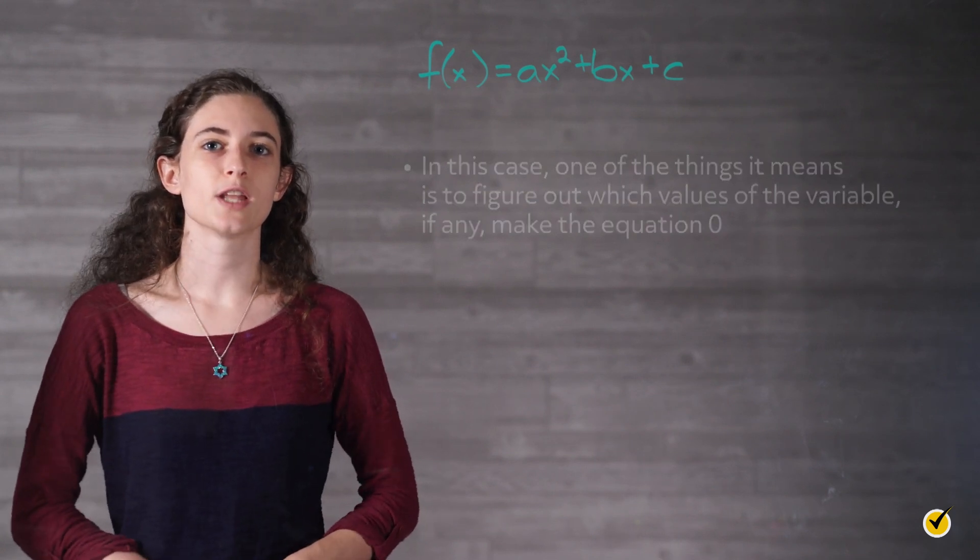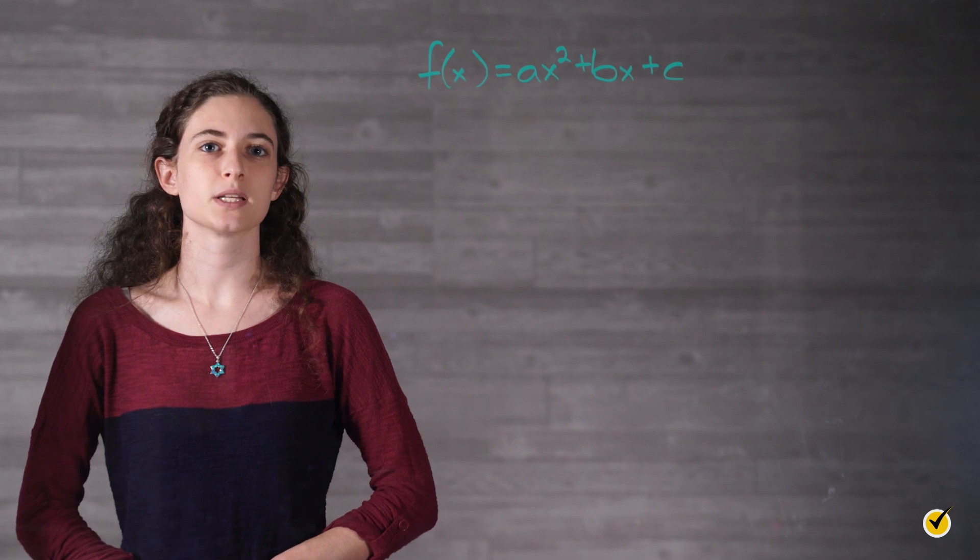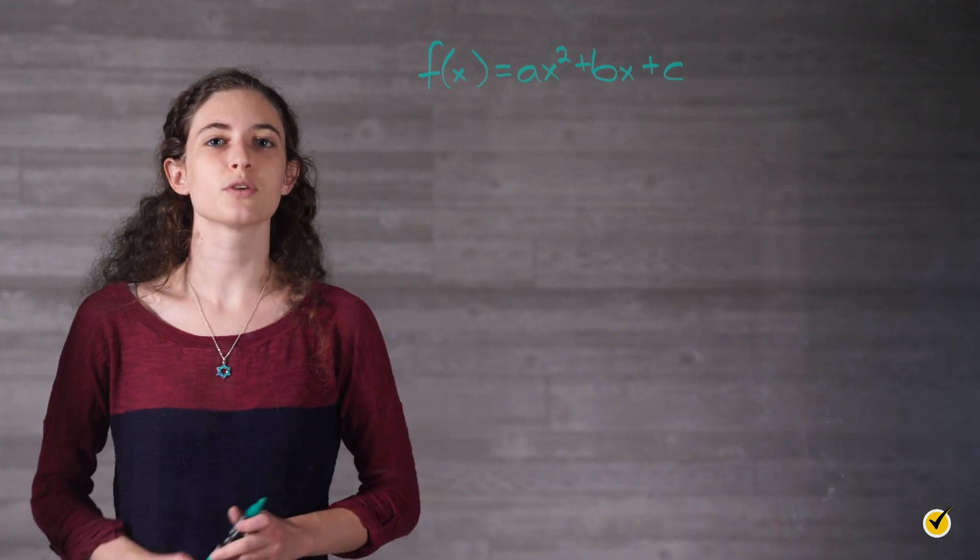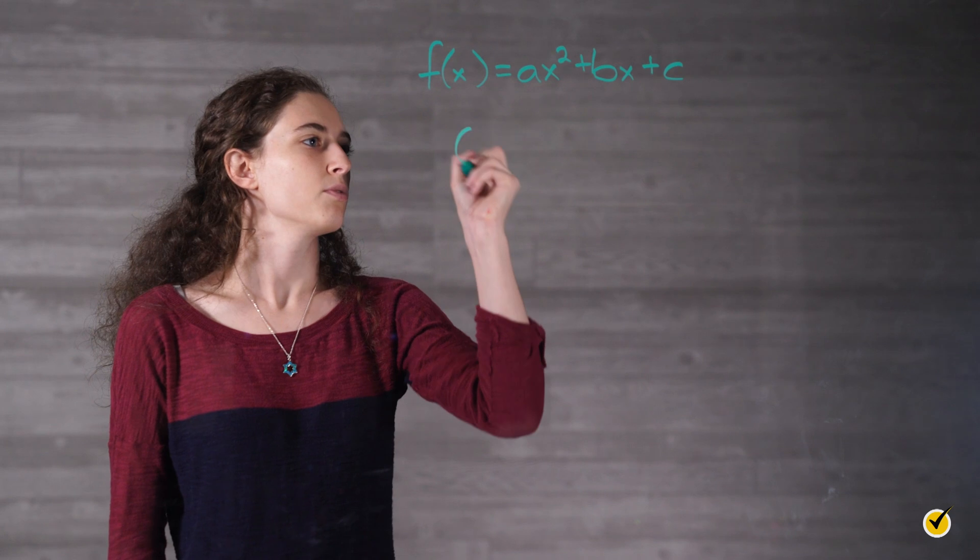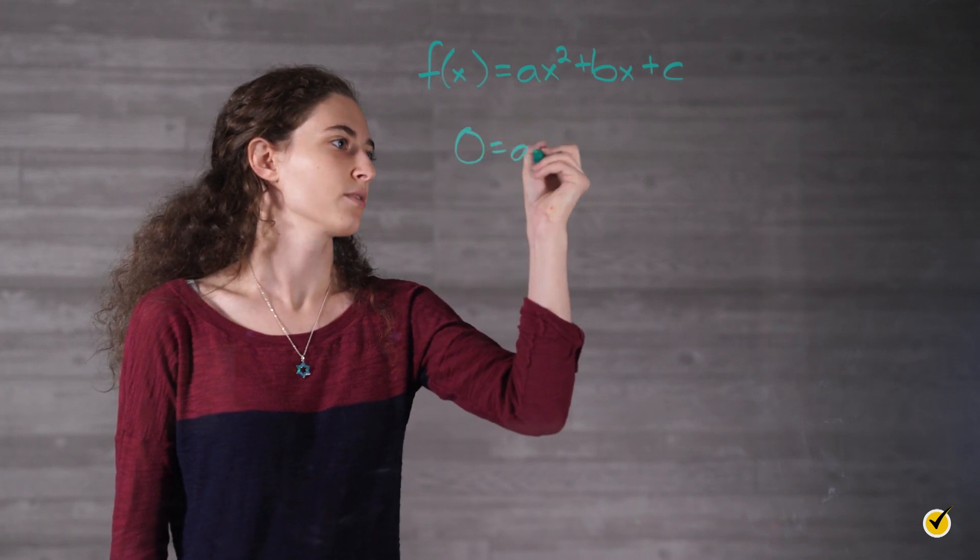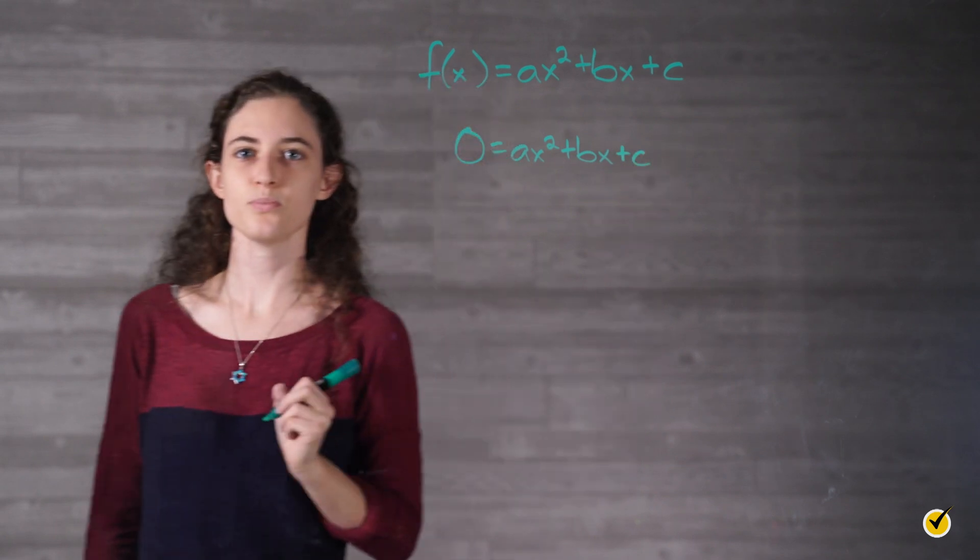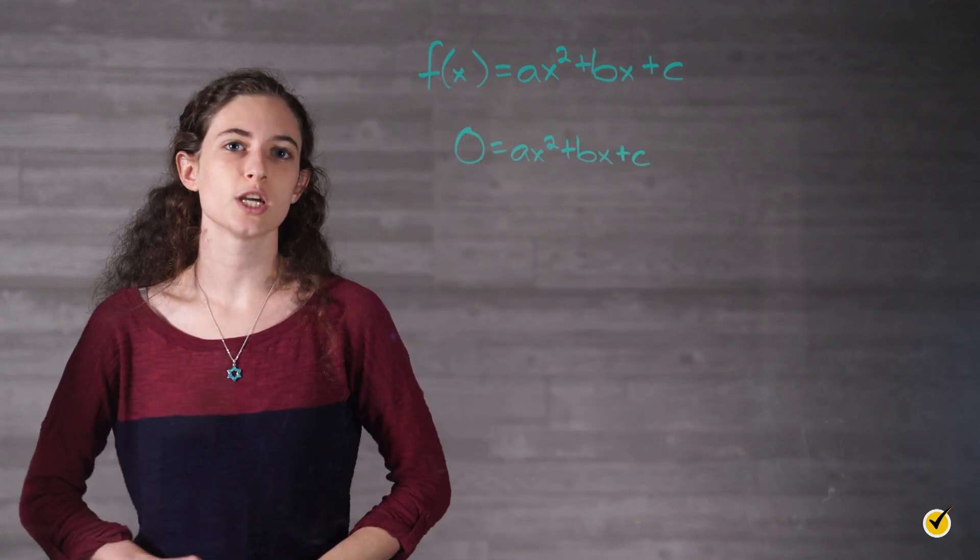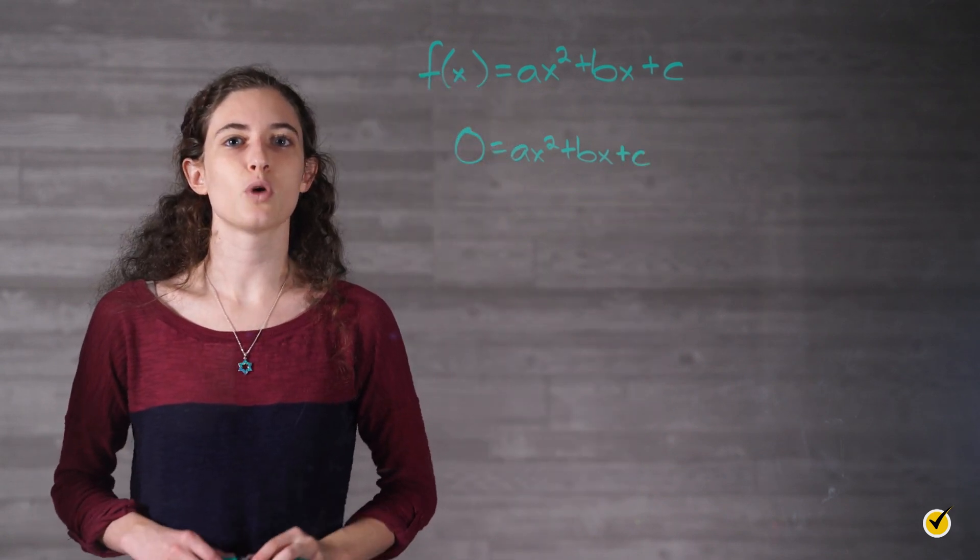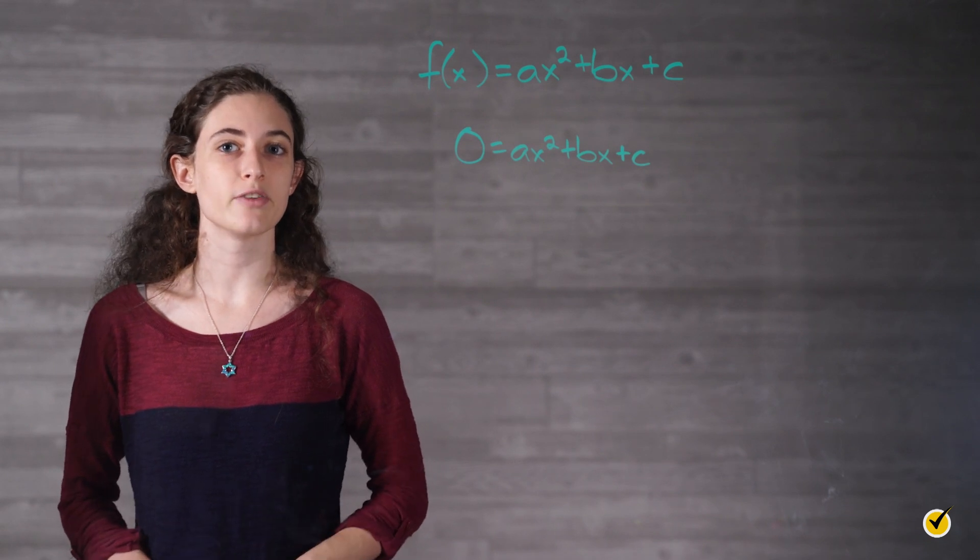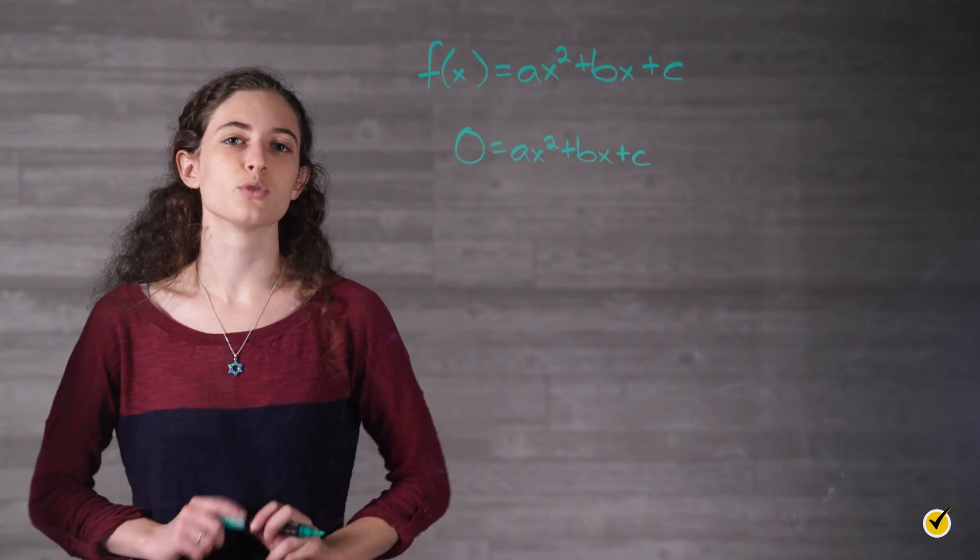So instead of the function f of x equals ax squared plus bx plus c, we write the related equation: 0 equals ax squared plus bx plus c. In other words, the solutions to a quadratic equation are the values that make the quadratic function true when f of x, or y, is equal to 0.